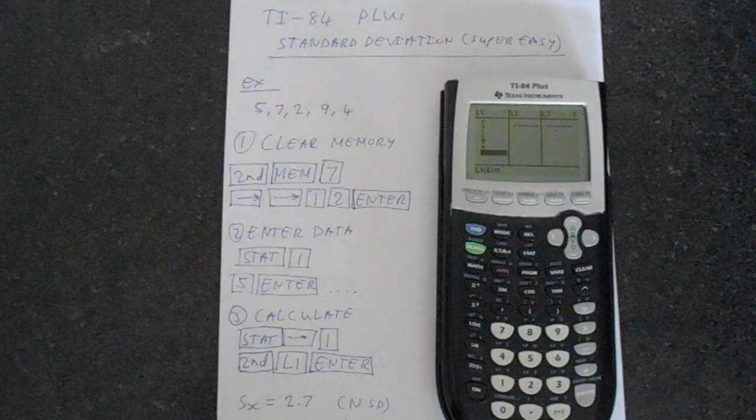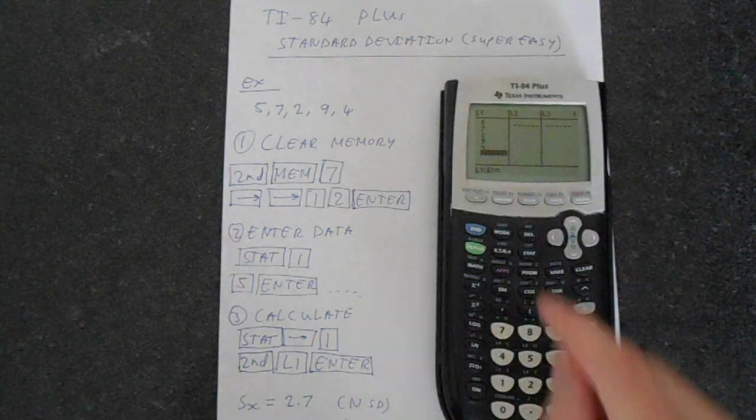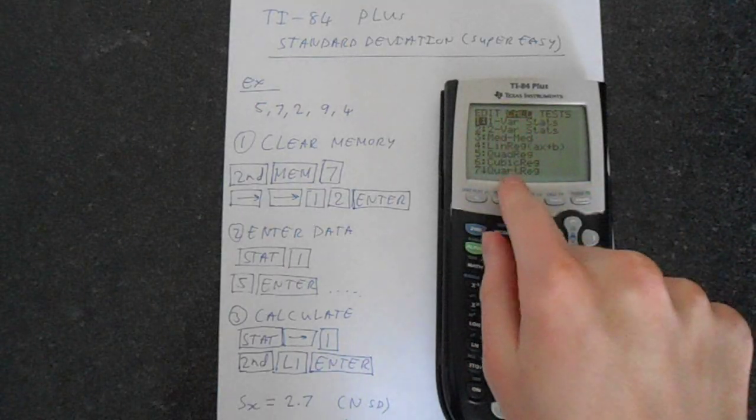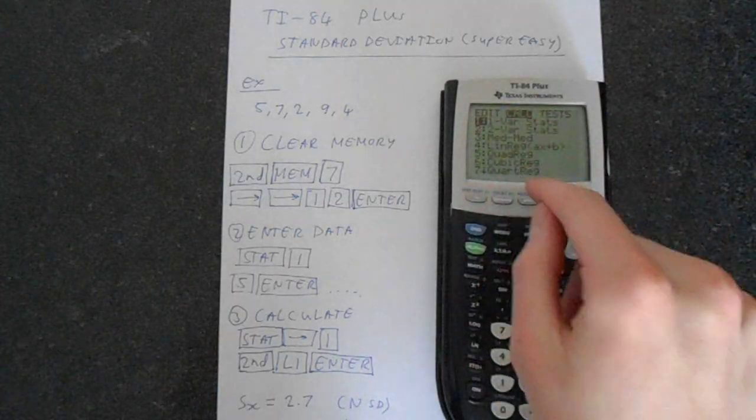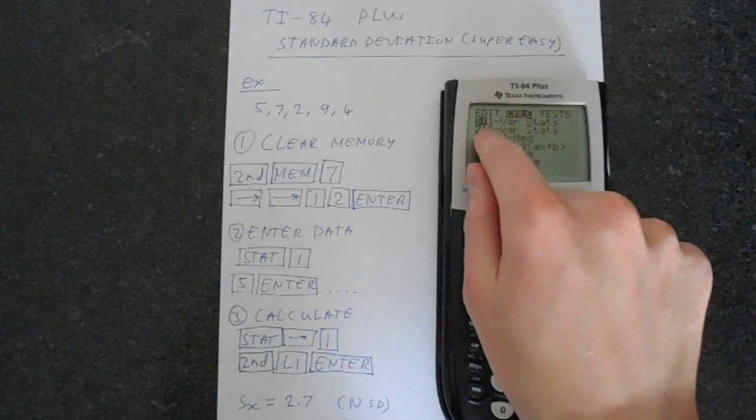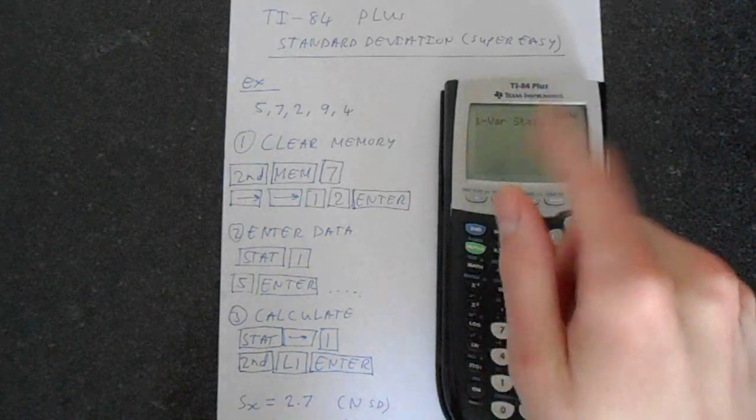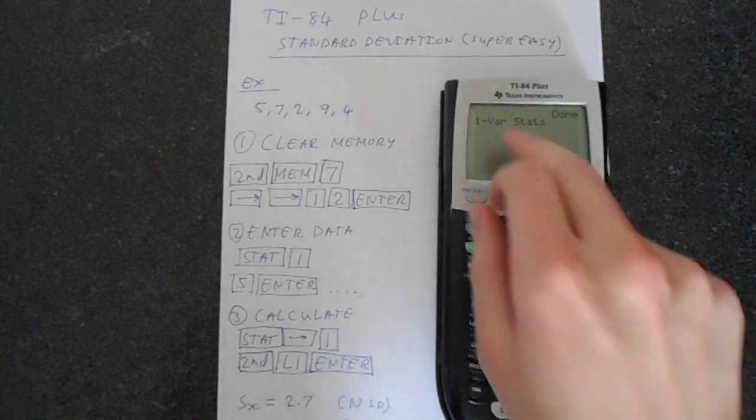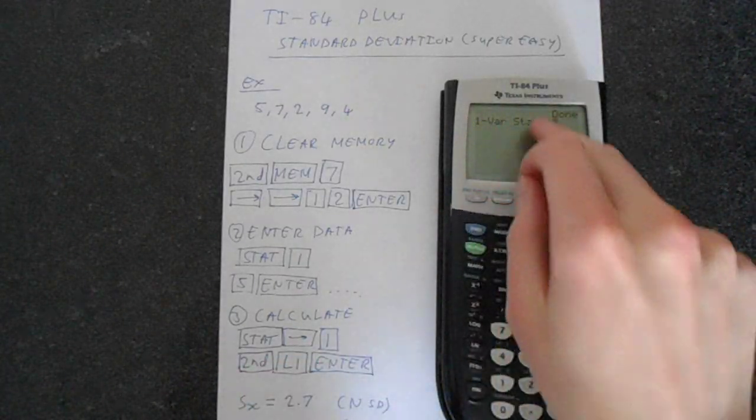Okay. Last step. Simply just calculate it. So if we go to stat and we go across to the calc menu we can access all the statistical functions that this calculator has. We want one variable statistics so we're just working with one list and so we need to tell it to do this on list one.